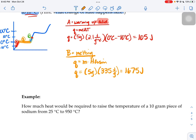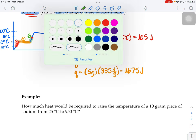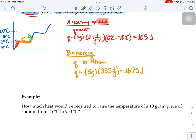No sig fig rounding yet, because this is just one piece of a bigger puzzle. Our last step is part C, where we just melted it. It's now a liquid, so we're going to warm up our liquid. When we're on those climbing parts of the graph, we get to use our Q equals MC delta T equation.